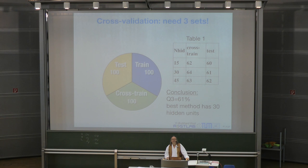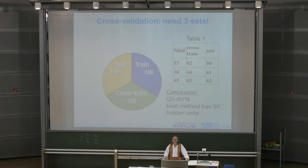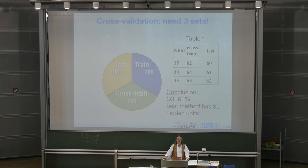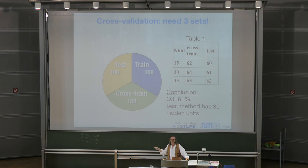A student asks: I always thought we have a training set and a test set — we use the training set to train the machine, and then the test set to verify if it's trained well, and they don't overlap. How do you use the cross-training set? That's fairytale land. That's what you find in most publications, and whoever doesn't apply machine learning for any important real-life business can do it that way.